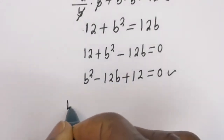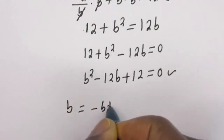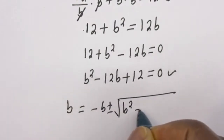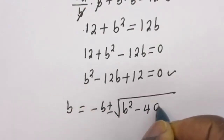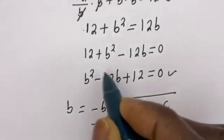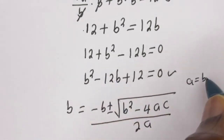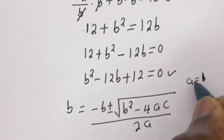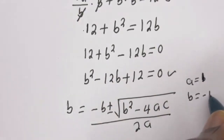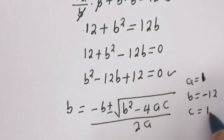From the quadratic general formula, b is equal to minus b, plus or minus square root of b squared minus 4ac, divided by 2a. From this equation, a is equal to 1, b is equal to minus 12, and c is equal to 12.